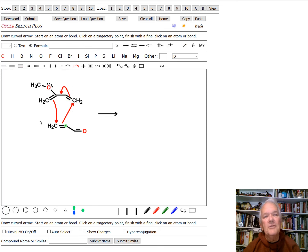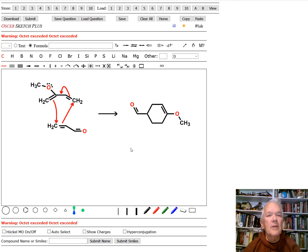There's no crossover this time because this one I've drawn correctly. And so again, we'll ask about the product. And you'll see now the electron withdrawing group is 1,4 to the electron donating group.